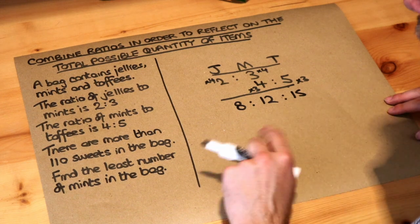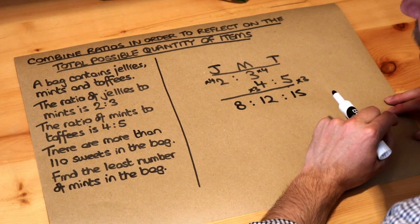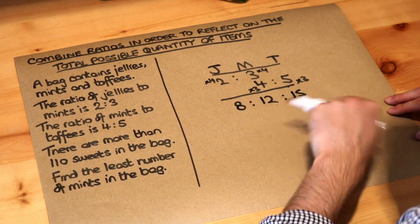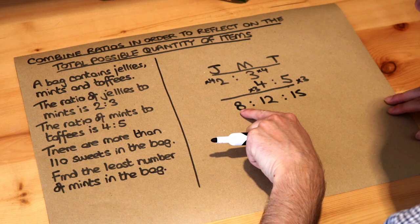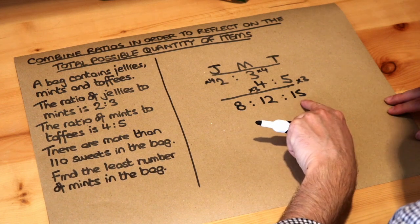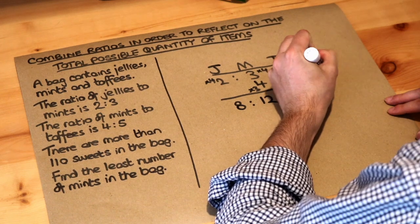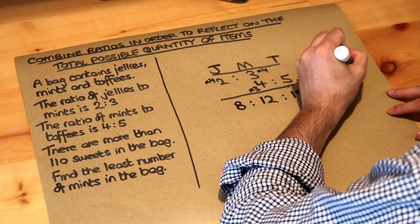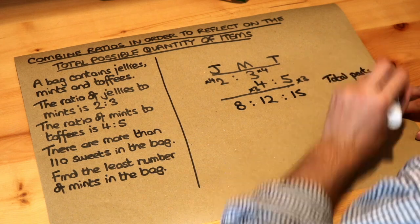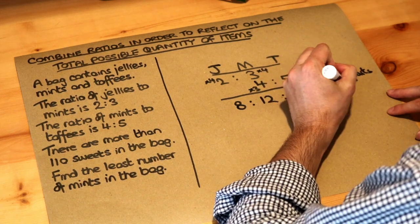Now we're told in total there are more than 110 sweets in the bag. Now let's think what this ratio means. It means that for every 8 jellies you have 12 mints and 15 toffees. How many sweets would that be in total?